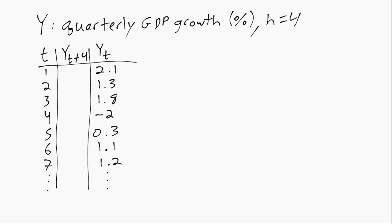So when t equals one, t plus four is one plus four or five. So we can go down here and look at the y5 value of point three and that's what will go up there.